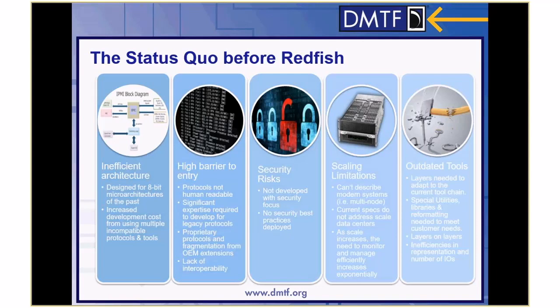All of these were built with tools that were great when first invented 10, 15, 20 years ago, but they needed layers to adapt them to the modern tool chain — special utilities, libraries, and data reformatting. The result was just a snarl of code to do manageability for servers. And the inefficiencies in representing systems resulted in an astronomical number of IOs to figure out exactly what was in a system, making scale very difficult.